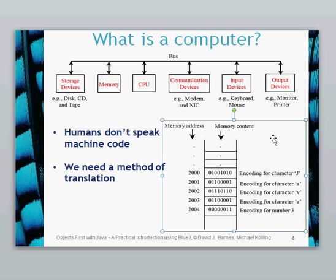Again, memory has to be represented in zeros and ones and we need a method of translation here. For example, we've got the ASCII representation of J-A-V-A, but again all represented in zeros and ones. The thing we do have though is a memory address, so we can get access to that memory.